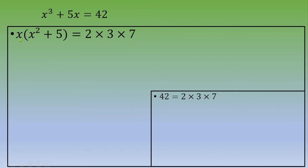So x equals 2 or equals 3 or equals 7. Let's try with 2. If x equals 2, then you plug 2 in this equation: 2 times 2 squared plus 5, 4 plus 5, this is 9, and 2 times 9 is 18. We would like to end up with 42, so 2 is not valid.